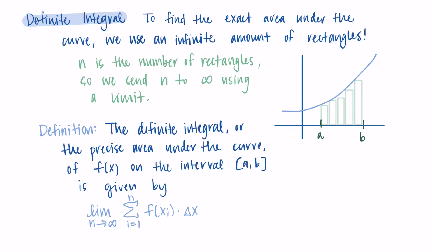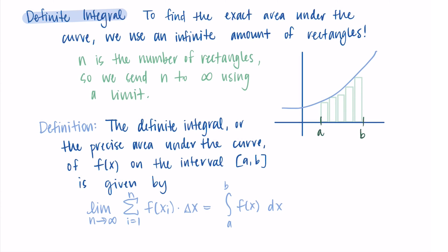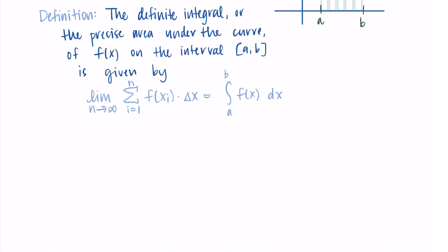We say that the limit of this Riemann sum, where we're taking an infinite number of rectangles, is equal to the integral from a to b of f of x dx. Let me unpack the pieces of that so we can make sure we understand what the symbols mean and what words we use to describe them. The s-looking symbol — the elongated s — is the integral symbol, and it represents the sum portion of the Riemann sum.